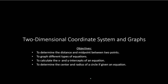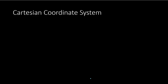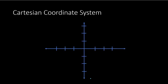To begin, let's talk about our coordinate system. The coordinate system we typically use is the Cartesian coordinate system. We have the horizontal axis, also called the x-axis, which goes left to right. Then we have the vertical axis, which goes up and down, called the y-axis. Where these two axes intersect is called the origin.